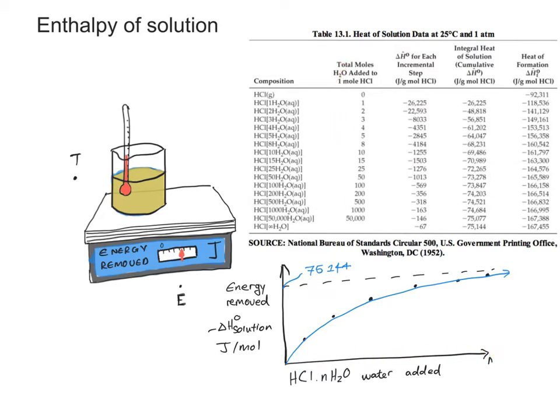And the axis that we've indicated here indicates for a given amount of water added what the energy removed had to be—how much energy had to be removed in order to get the temperature back to 25 degrees—that would be this column over here.